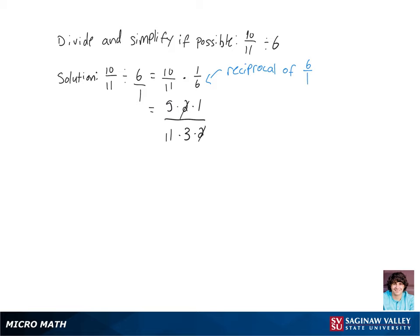We're going to cancel a 2 off the numerator and the denominator. And we're left with 5 over 11 times 3, which is 5 over 33. And that's our final answer.